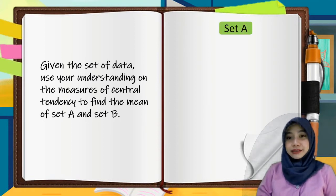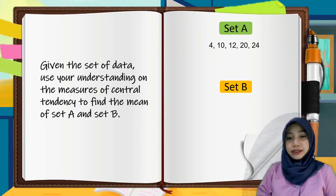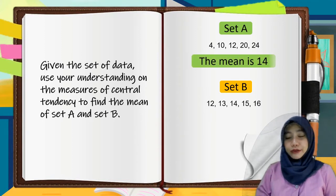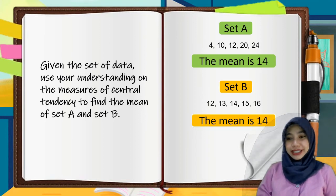We have set A: 4, 10, 12, 20, and 24. And set B: 12, 13, 14, 15, and 16. The mean of set A is 14, and the mean of set B is also 14.